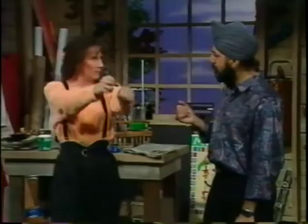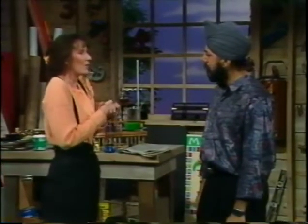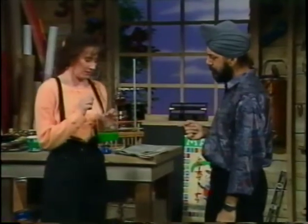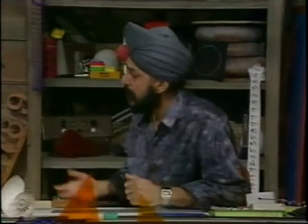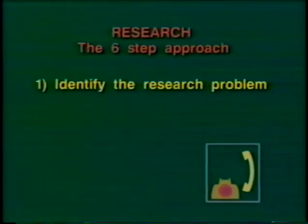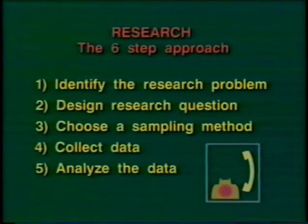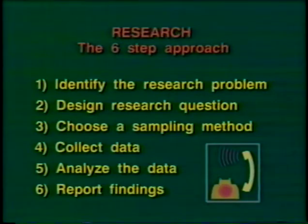Today on Math Shop, I'm going to conduct a simple research study right here before your very eyes. I'm going to study the effects of ultraviolet rays on the growth rate of Dictyostelium discoideum — I'm going to shine some UV light on this slime mold. While Christine takes a call, I'll go over the basics of any research. How you conduct research directly affects the validity of your findings. There are six basic steps: identify the research problem, design your research question, choose a sampling method, collect the data, analyze it, and then report your findings.